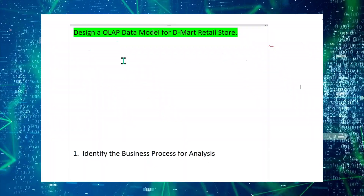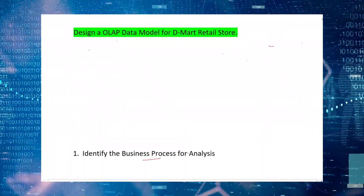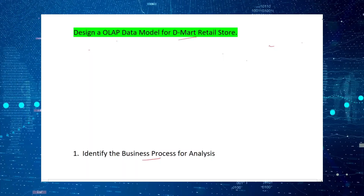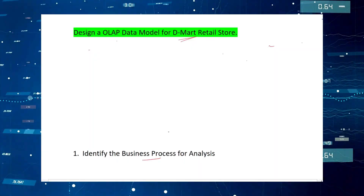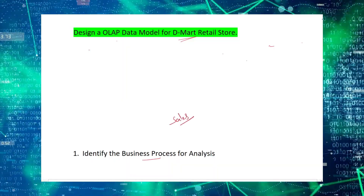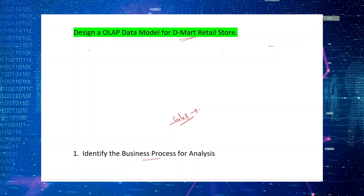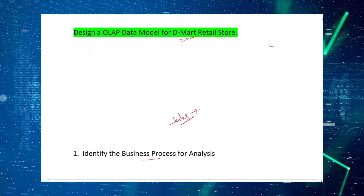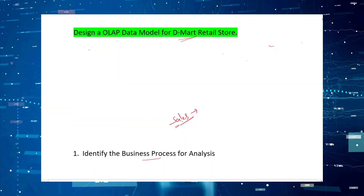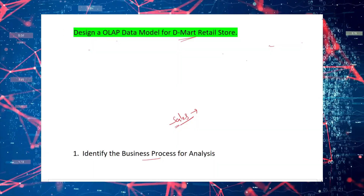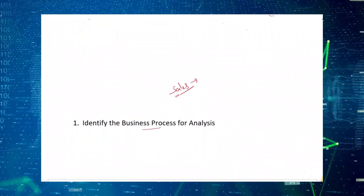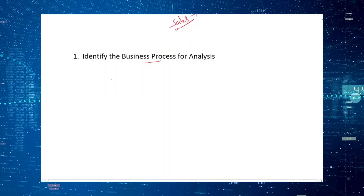The very first step is identifying the business process. We need to understand what the business process is. For the D-Mart retail store, the key transaction is sales. A customer visits the store, buys some products by paying money — that is the sales transaction. We need to clarify this with the interviewer so we can understand the business process, and we can ask for clarification as needed.